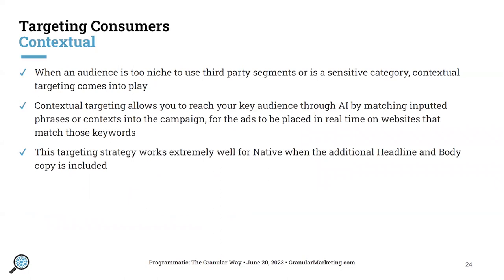Contextual targeting is another great option, good for when an audience is a little too niche or if it's a sensitive category. Contextual targeting lets us give programmatic campaigns certain keywords or phrases, and then it will find those phrases within the context of a website, allowing us to target specific webpages. This works really well for native ads, which give you more room for headline and body copy, and native really blends into the content the user is already consuming on that page.